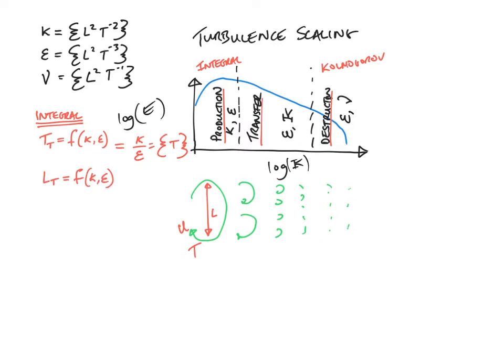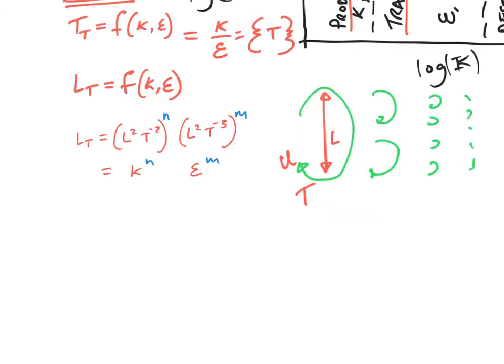So that's fairly straightforward. Now to find the length scale at the integral scale, it's a little bit more complicated. We know that it's a function of k and epsilon again, and we can apply basic dimensional analysis in order to work out what it should be as follows.